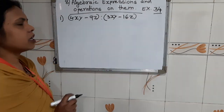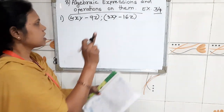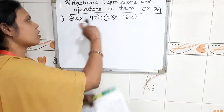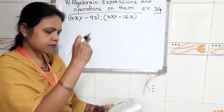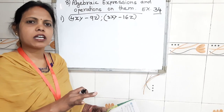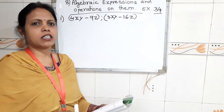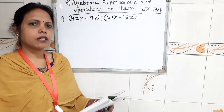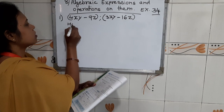Here, one more thing: it is given that we subtract the 2nd expression from the 1st. I will give you this same sum in both methods — horizontal method as well as vertical method. So children, here is the first one: horizontal method.